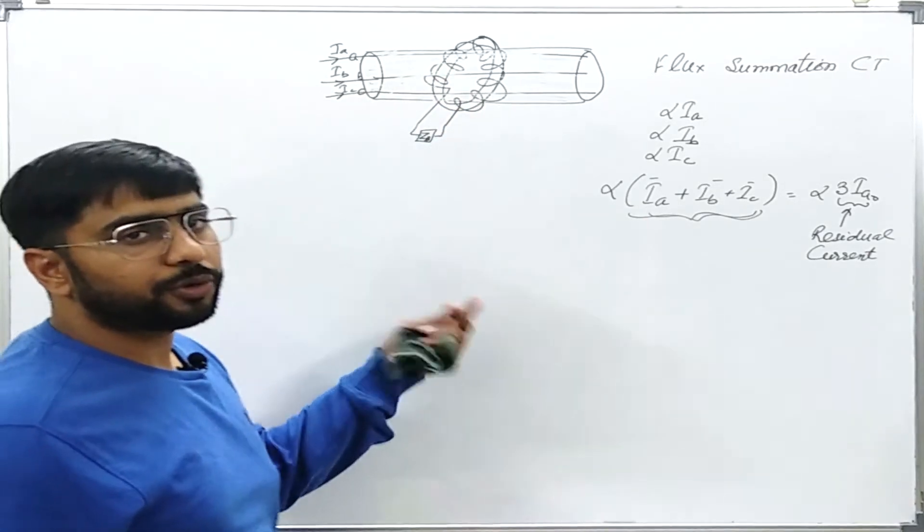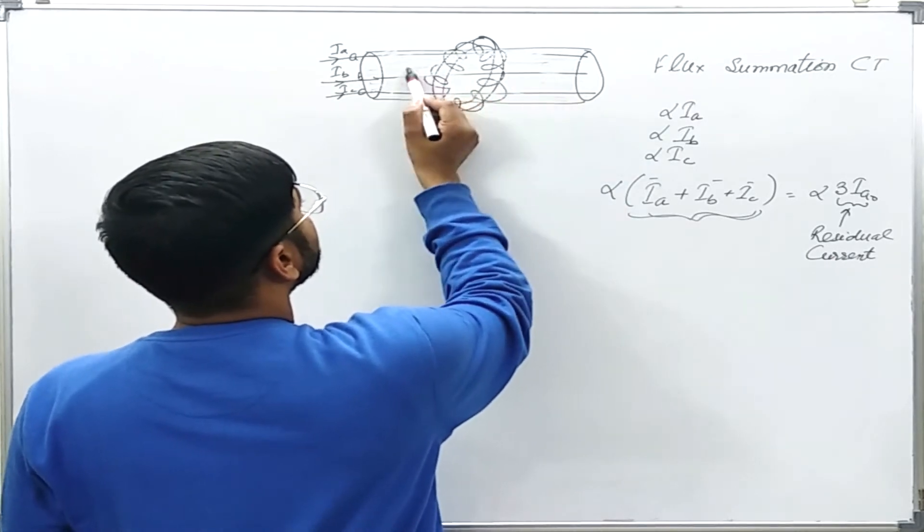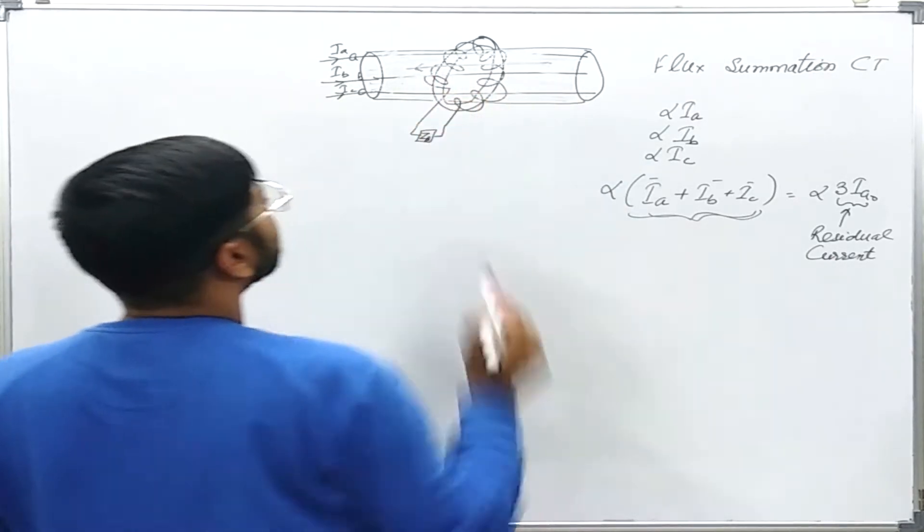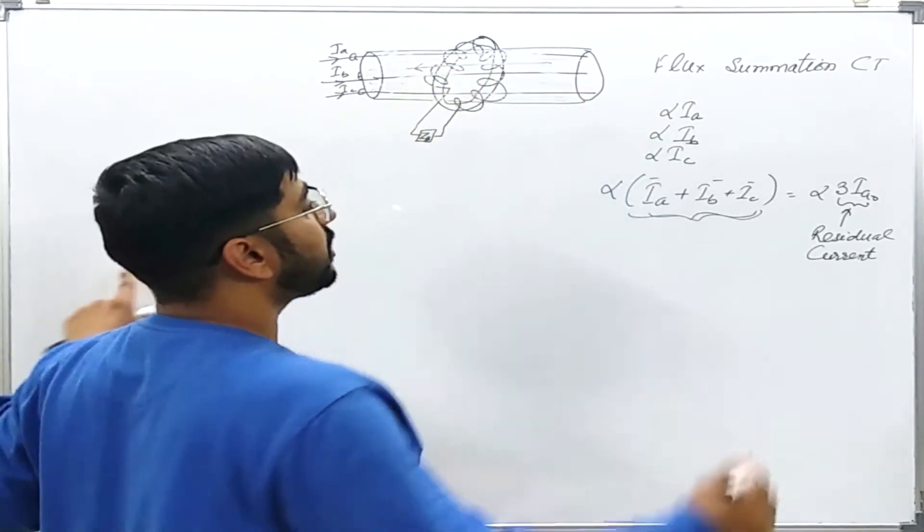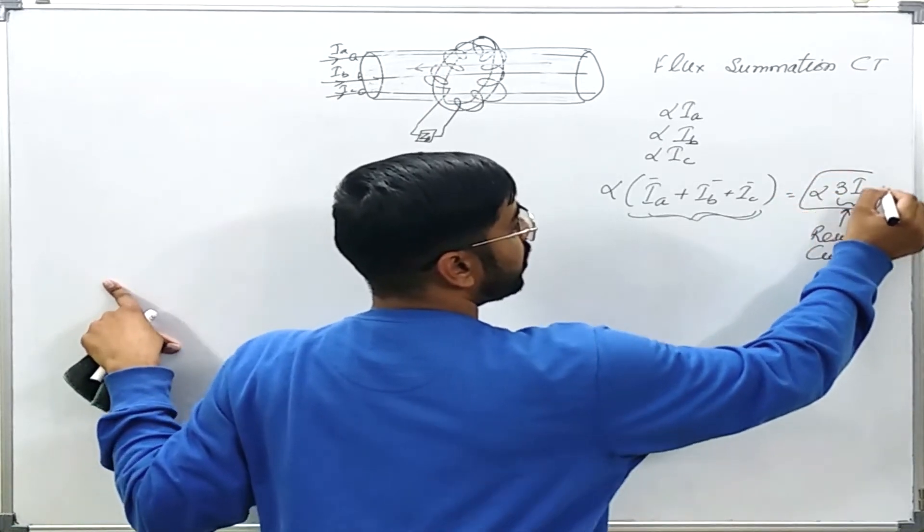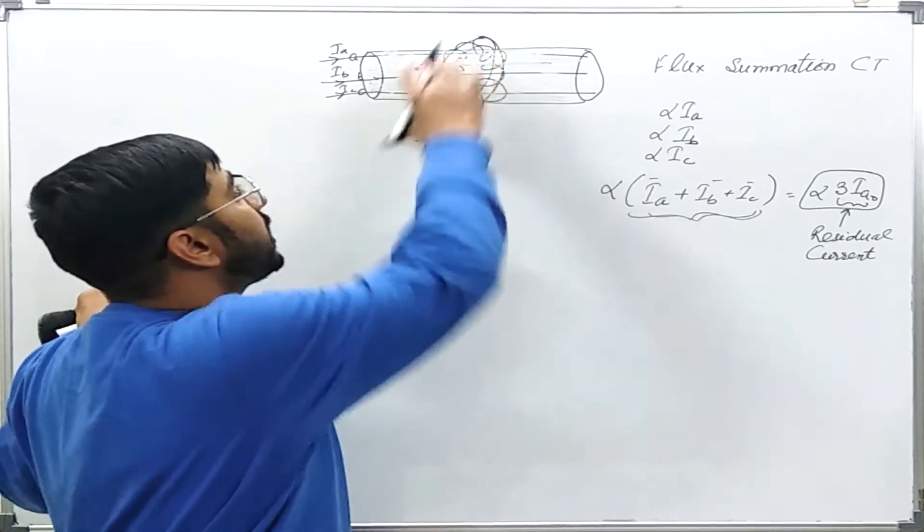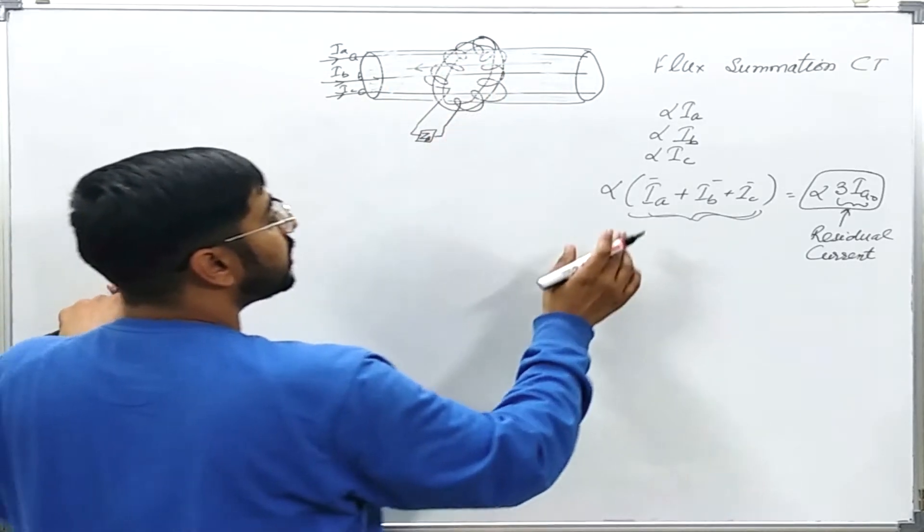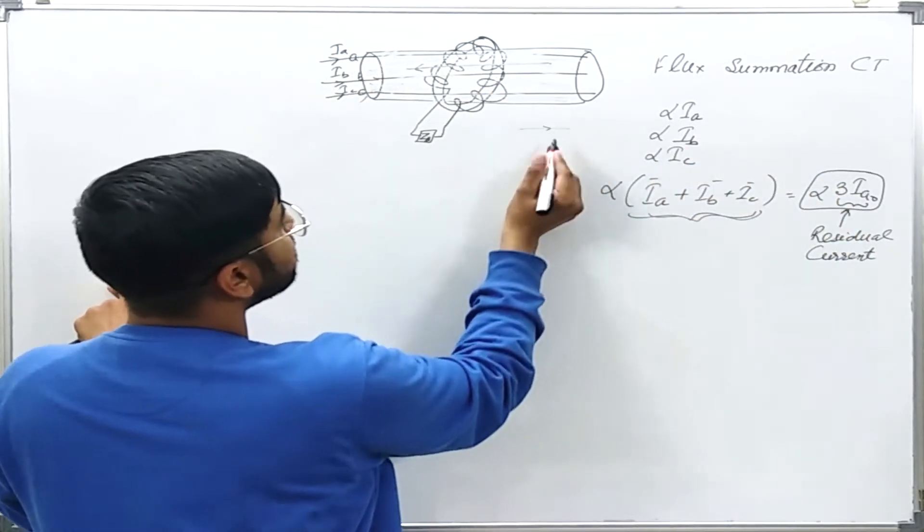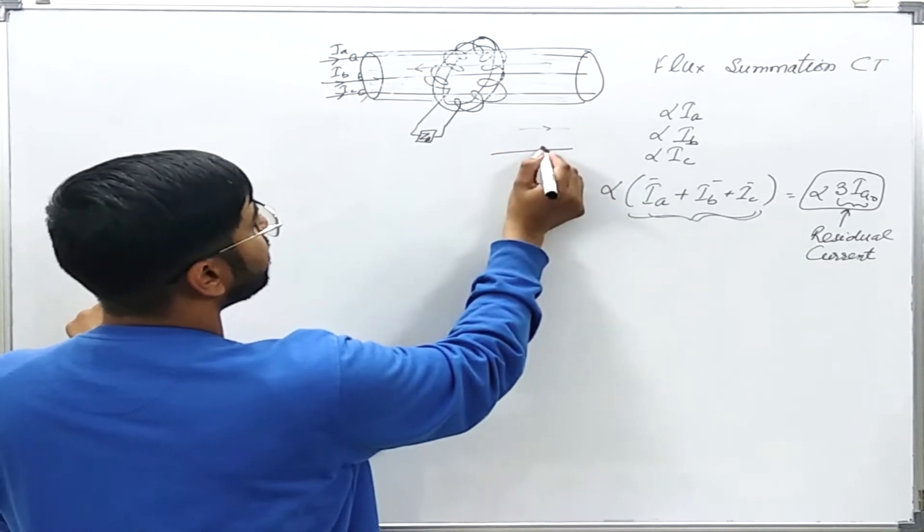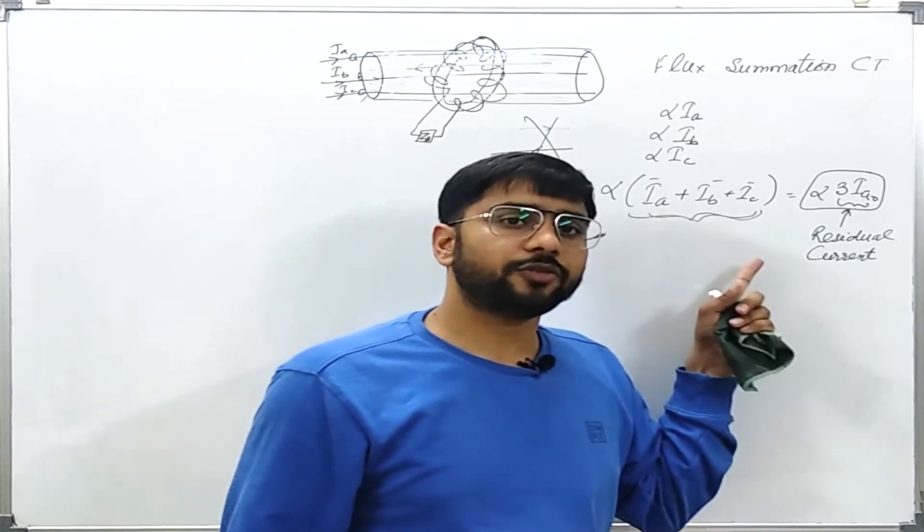This metallic sheath will be having some current, either due to the fault or due to some other scenario. And this current might be flowing in the opposite direction. On the similar principles of induction, this current will be similar to this 3IA0 only. The resultant flux in this CT now what will happen? It will get cancelled out. This 3IA0 because of the phase conductors in this direction and this 3IA0 because of the sheath current in this direction will get cancelled out. How to solve such kind of problem?